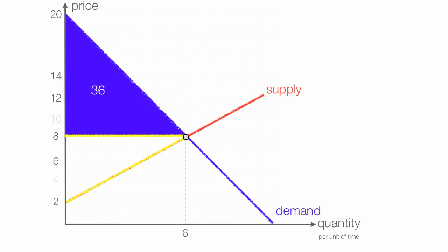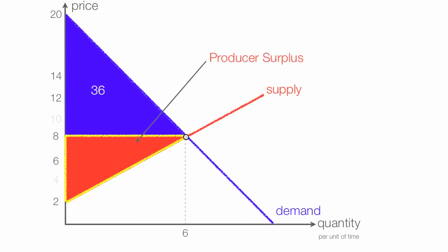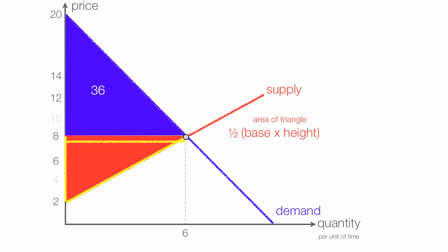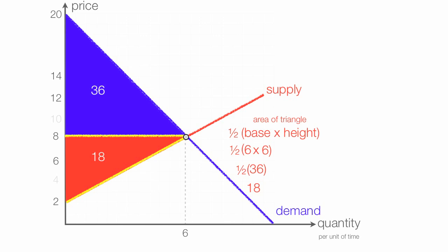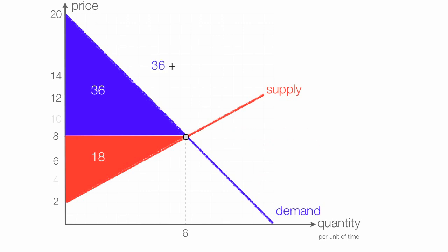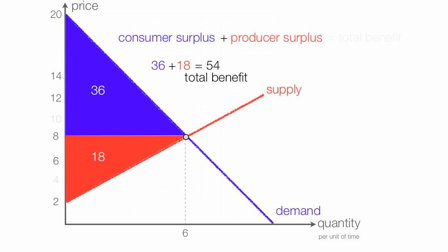Producer surplus is the area below the price and above the supply curve, outlined in the red triangle. It is one half times the base times the height. The base is 6, and the height is also 6, since 8 minus 2 equals 6. So I have one half times 36 which is 18. Producer surplus is 18 and consumer surplus is 36. Total benefit is 36 plus 18 which equals 54 — that's our total benefit, which is consumer surplus plus producer surplus.